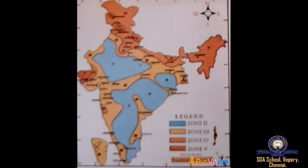Earthquake-prone regions of the country have been identified on the basis of scientific inputs. The Bureau of Indian Standards has grouped the country into four seismic zones: Zone 2, Zone 3, Zone 4, and Zone 5. No area of India is classified as Zone 1.